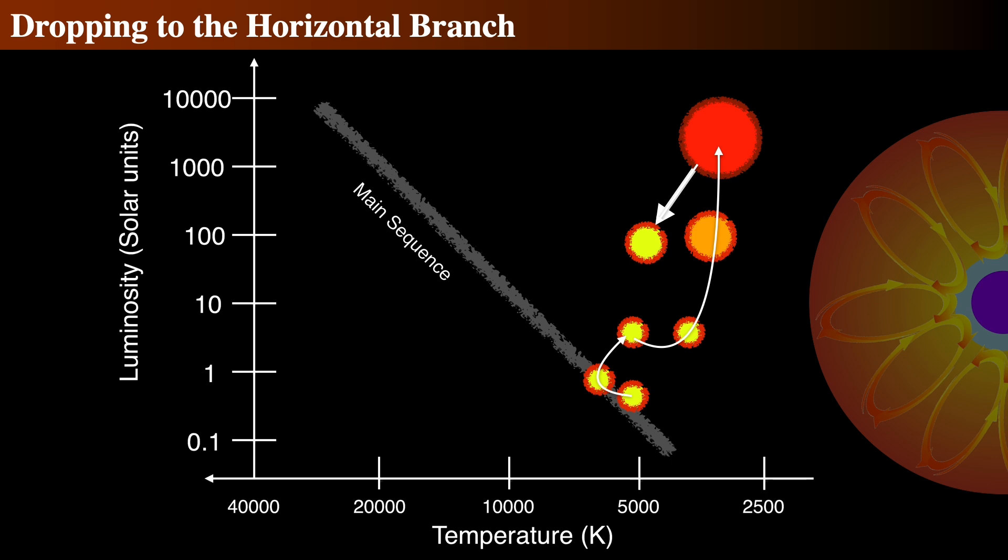This energy output results in an abrupt decrease of the star's luminosity as seen from the outside. The lower luminosity allows the envelope to contract and the effective temperature to increase. This process means that the star will descend quickly into a new region of the HR diagram, the horizontal branch.